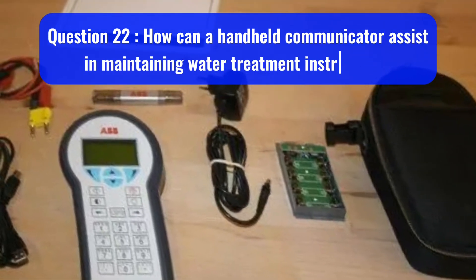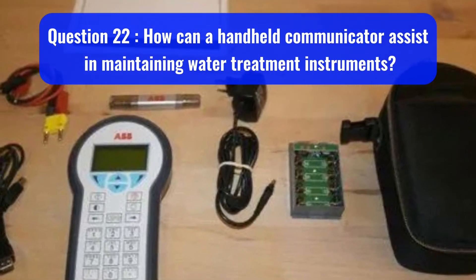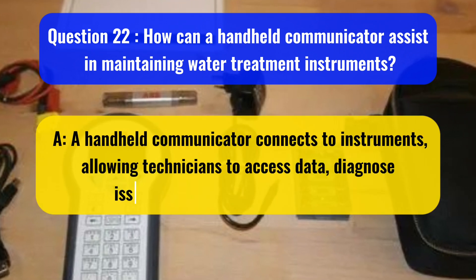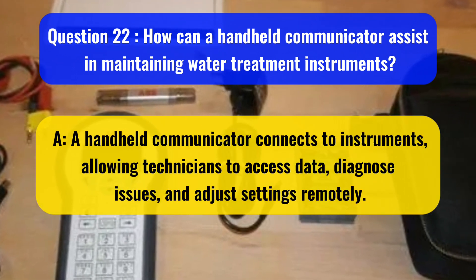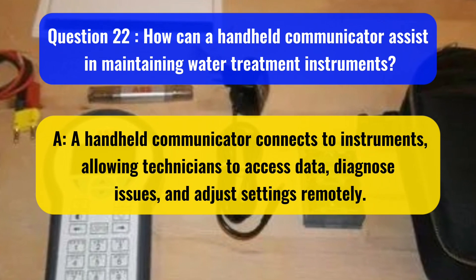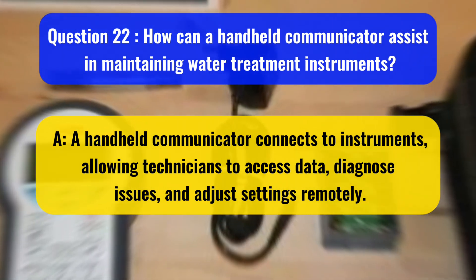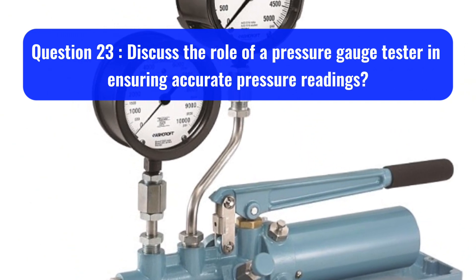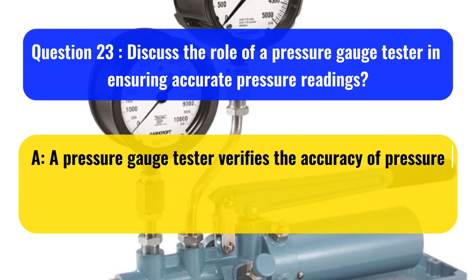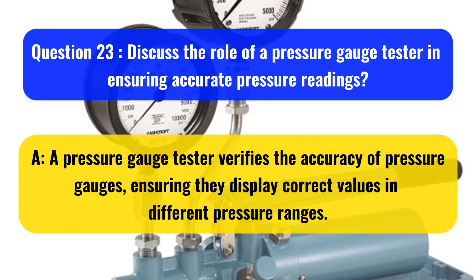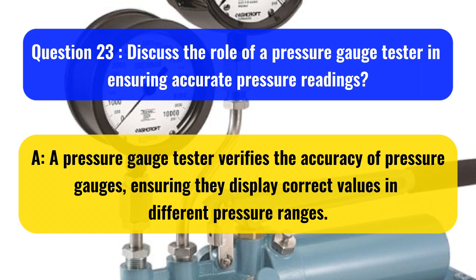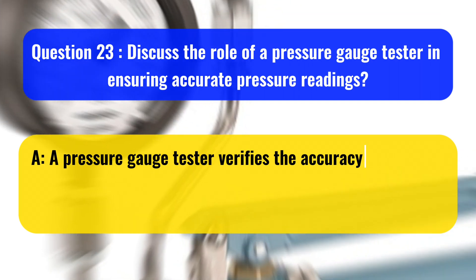Question 22: How can a handheld communicator assist in maintaining water treatment instruments? A handheld communicator connects to instruments, allowing technicians to access data, diagnose issues, and adjust settings remotely. Question 23: Discuss the role of a pressure gauge tester in ensuring accurate pressure readings. A pressure gauge tester verifies the accuracy of pressure gauges, ensuring they display correct values in different pressure ranges.